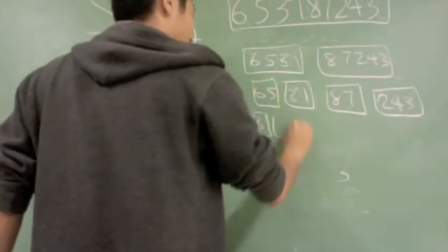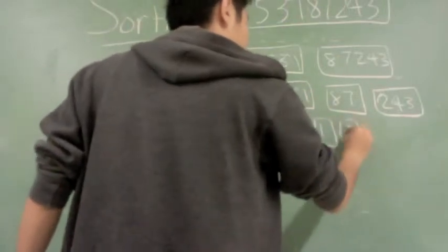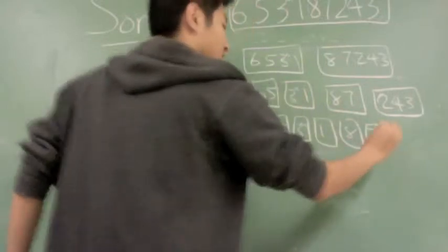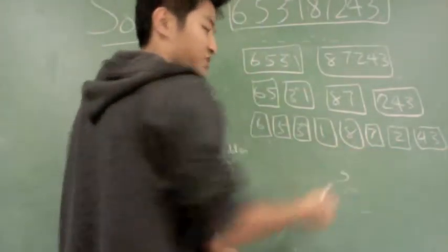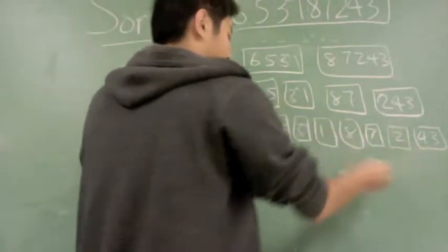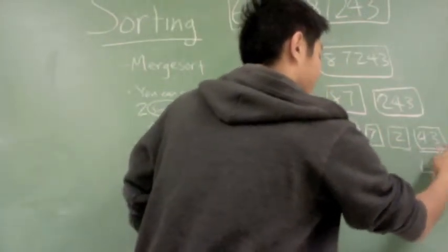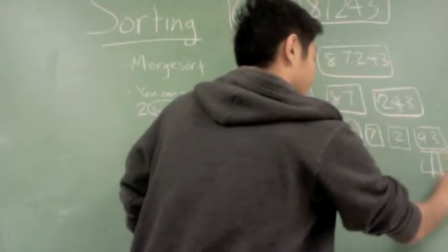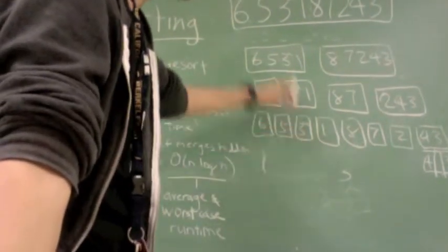So we get 6, 5, 3a, 1, 8, 7. Now here we have an odd number, so we have to do one more level of recursion, which is okay because this is just a constant. I'm just going to split this up here: 4 and a 3. So this is how the list will be divided into each individual part.